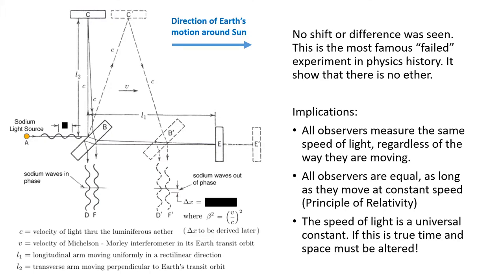No matter what they did around the course of an entire year, no shift or fringe change was seen in this interferometer. This is a failed experiment, essentially. It's the most famous failed experiment in physics history. But its failure showed that there is no ether. And the implications are that all observers measure the same speed of light, regardless of the way they're moving. And that all observers are equal, as long as they move at constant speed. That is the new principle of relativity. And the final conclusion, the speed of light is a universal constant.